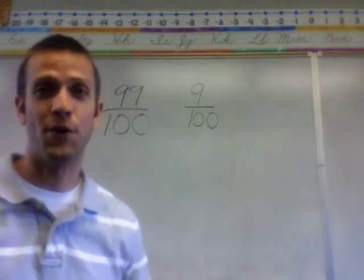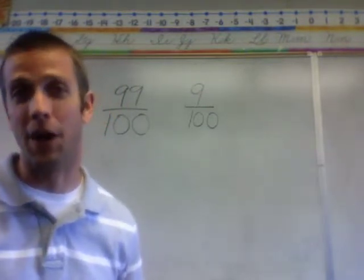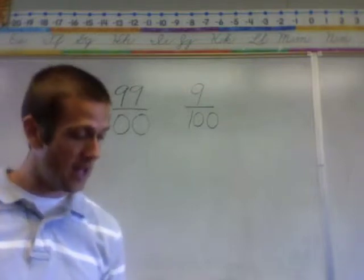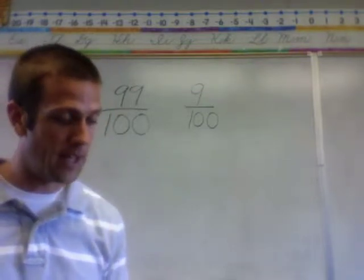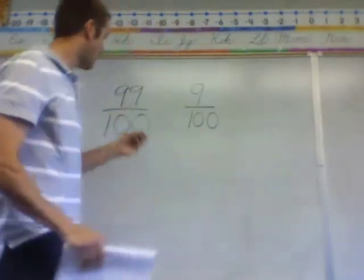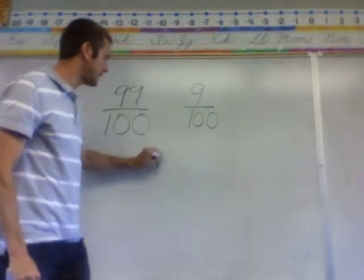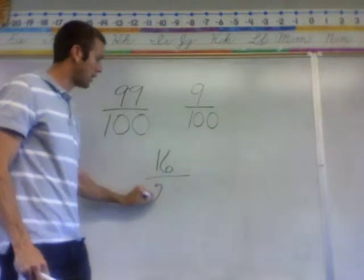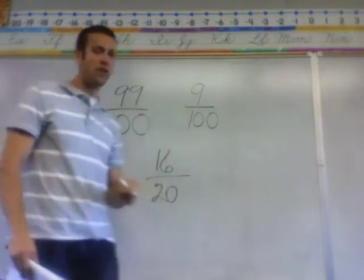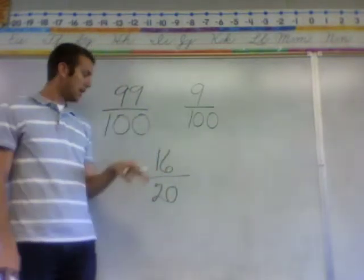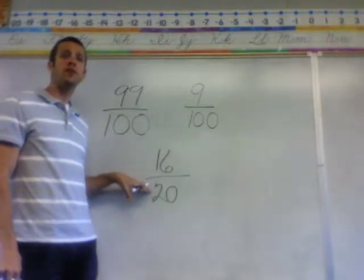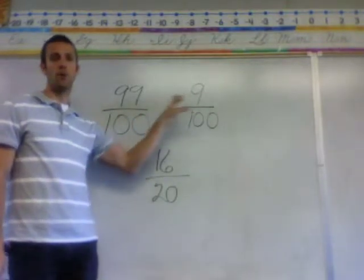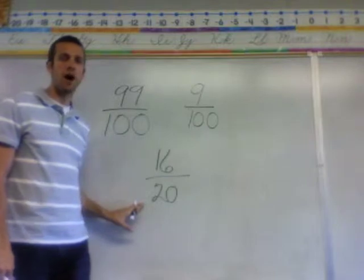However, on your homework today you don't have 100's on the bottom. Take number 3, for example: 16 out of 20 is what percent? When you hear things like 16 out of 20, think of a fraction. 16 out of 20 needs to be turned into a percent like these ones were, but 100 is not on the bottom.